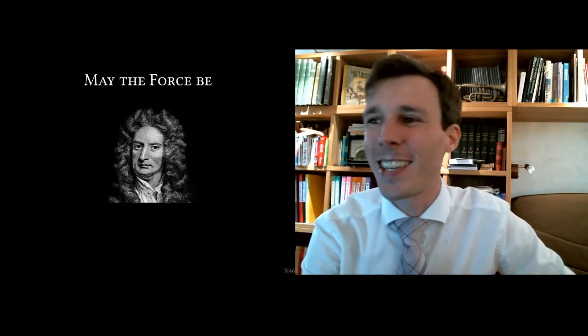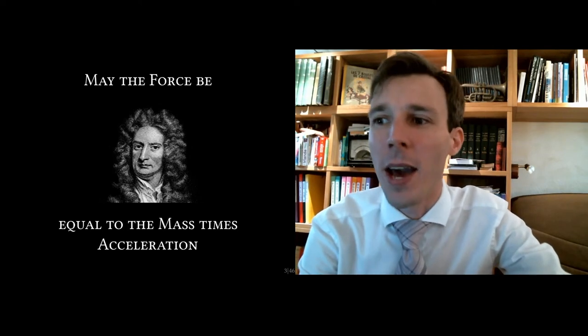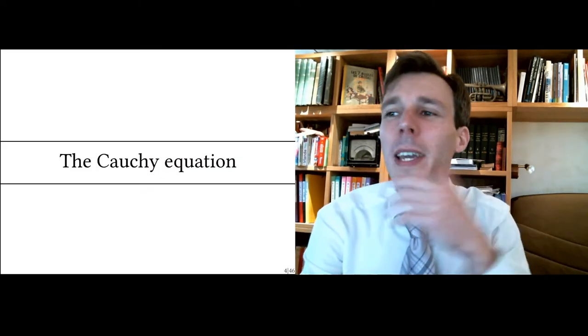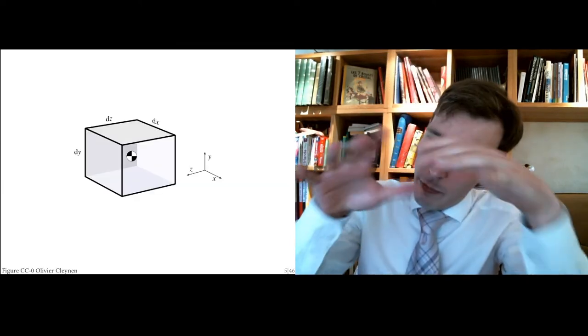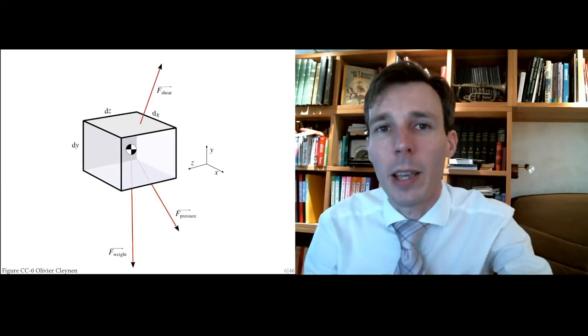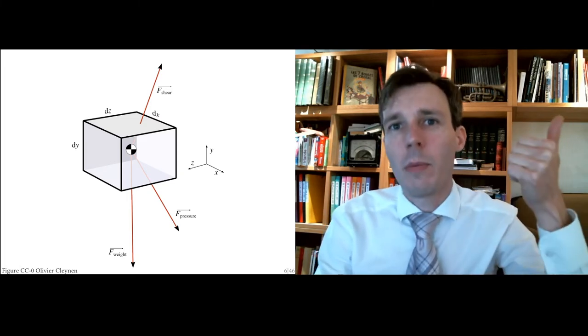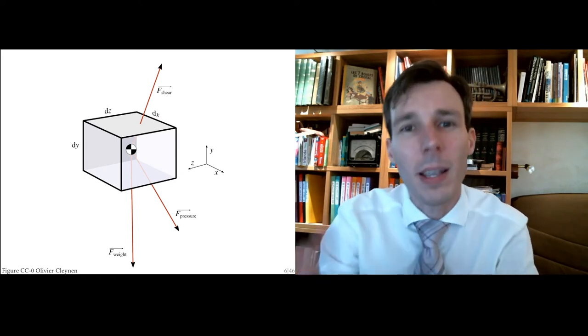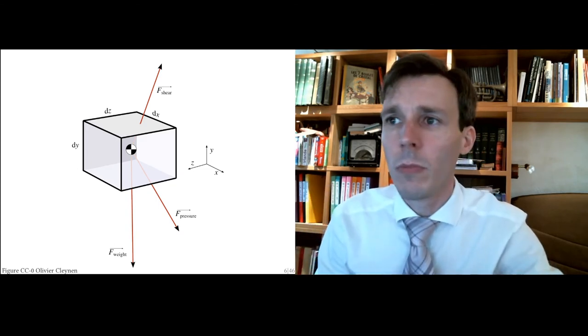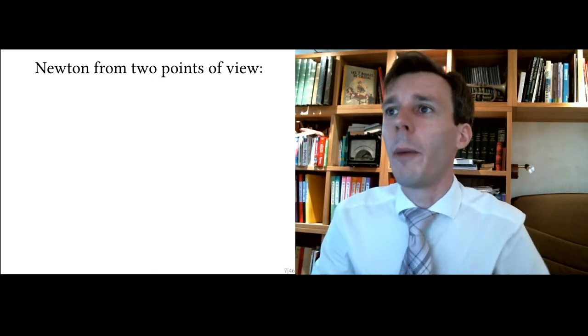We balance the linear momentum of particles flowing through a grid. We begin with Isaac Newton, who tells us that the force applied to particles equals mass times acceleration. We start with what is now called the Cauchy equation, written by French scientist Cauchy. We look at a small box of fluid and apply our knowledge of three kinds of forces: shear, pressure, and gravity. Adding those three forces must equal, per Newton, the mass of the fluid particle times its acceleration.